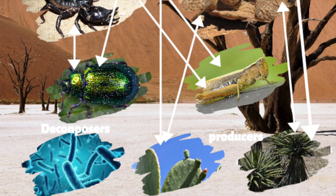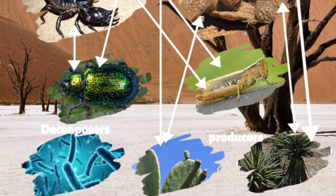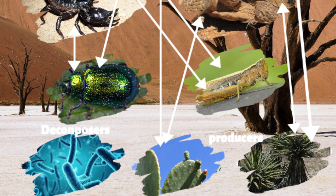Higher up in the food chain are carnivores such as coyotes, bobcats, foxes, and skunks. The largest desert mammal, found at higher elevations, is the bighorn sheep.